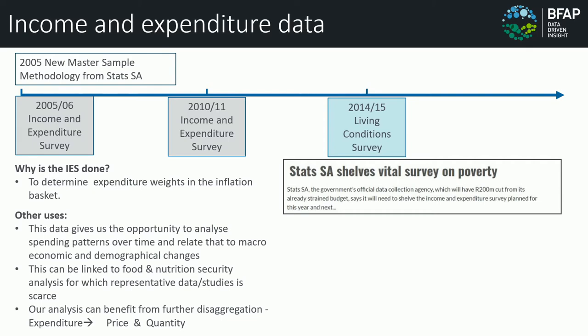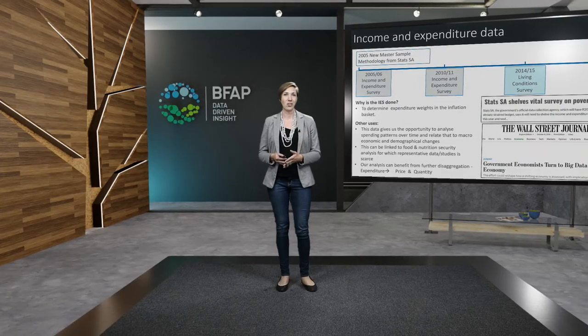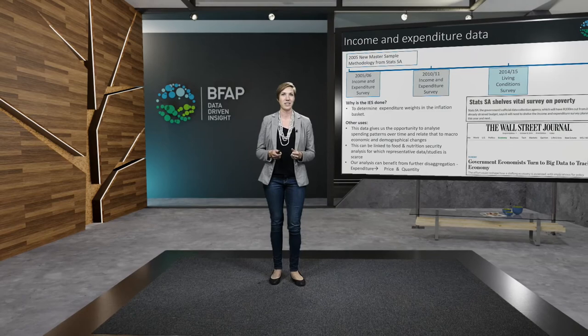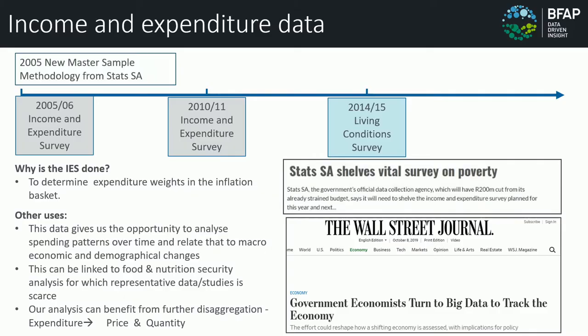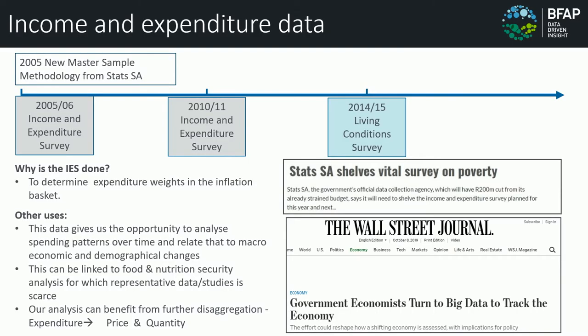Budget cuts is something the international community is facing, and other governments are also being creative about where to get data from. We've got an article from the Wall Street Journal where the American government is looking towards big data technologies to gather some of the information points covered in the IES. I think Stats SA is not far behind — they've been using price scraping tools during lockdown when retail prices weren't available. Turning towards these cost-effective ways will open up budget to capture more important or missing data points.